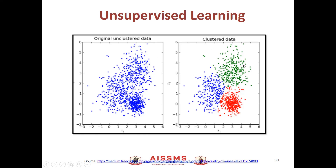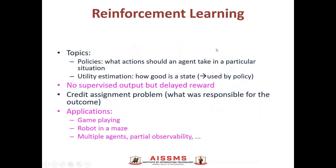The first cluster is the green cluster, the red cluster, and the blue cluster. This is how we can do clustering by using unsupervised learning.